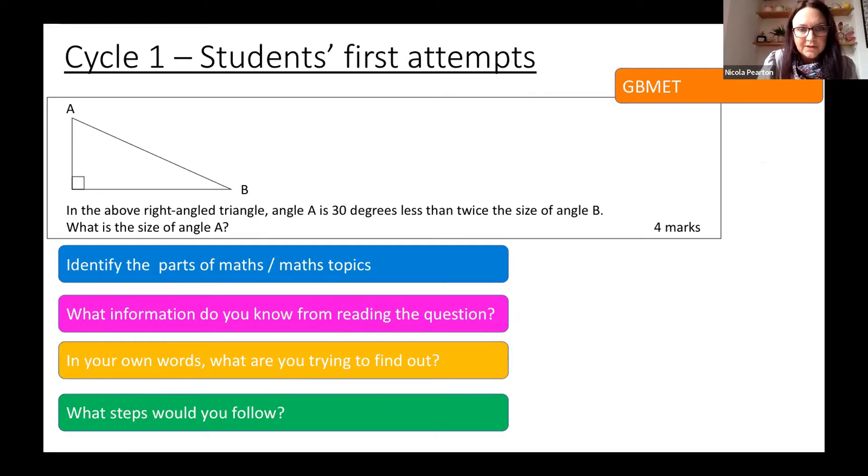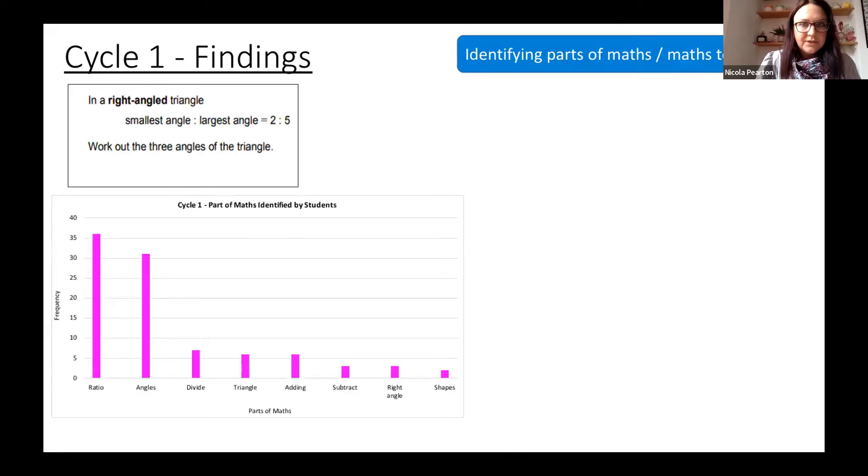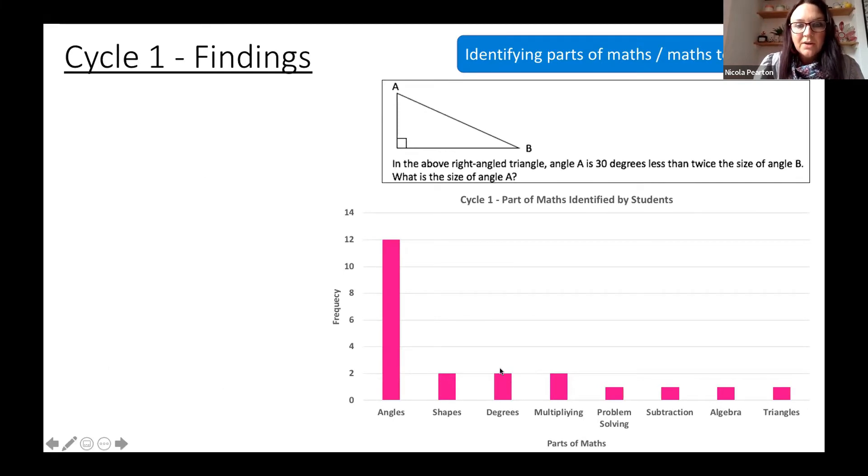What we found—when they were asked to identify the parts of math, the Crawley and Chichester students, most of them said ratio, angles. One thing that's quite interesting, and it came up again with the Brighton students, was that even though it says right-angle triangle and three angles of the triangle, very few instances of triangle being mentioned. If we look at the Brighton students' responses, most say angles, but again very few say triangles. In order to solve both these questions, you had to use 180 degrees or the three angles of a triangle, so that was really interesting.